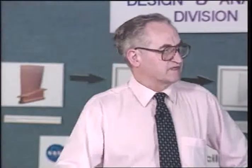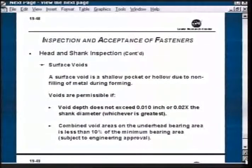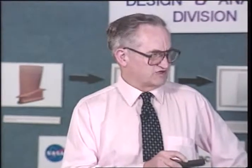Surface voids - you can get this in a material due to the way it's formed, but you've got to watch if it indicates there's probably something wrong with the chemistry of the material if you're getting a lot of voids in the surface. The void depth you're allowed is .02 times the shank diameter - that's ten thousandths. A ten thousandths void is a pretty shallow one. If you had void areas that were a high percentage of the under-head bearing area, I would look at the material to see whether I had the right material chemistry, and whether I'd want to reject it on that basis.